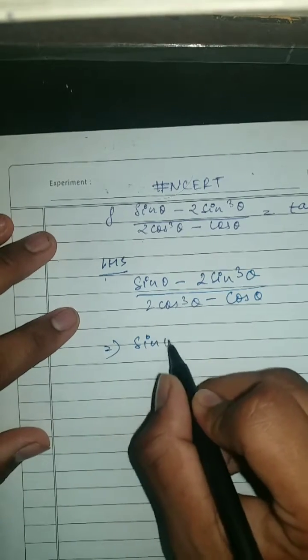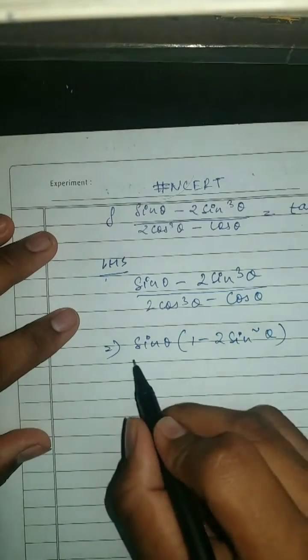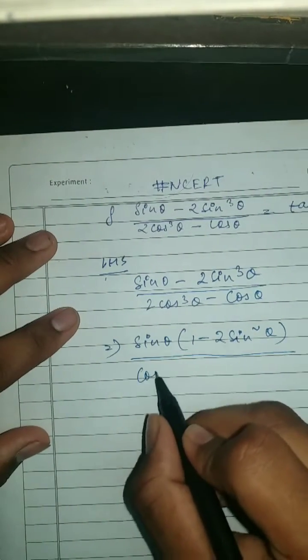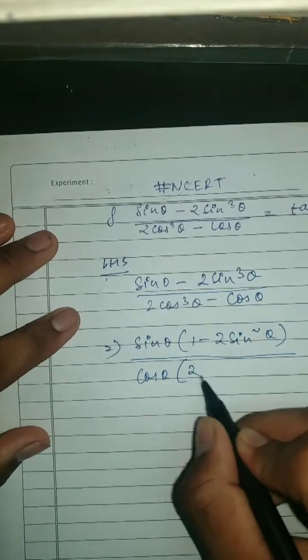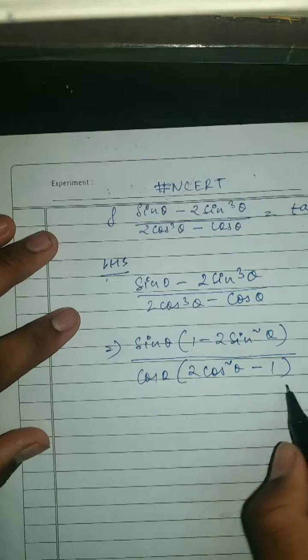What we got is sine theta times 1 minus 2 sine squared theta upon cos theta times 2 cos squared theta minus 1.